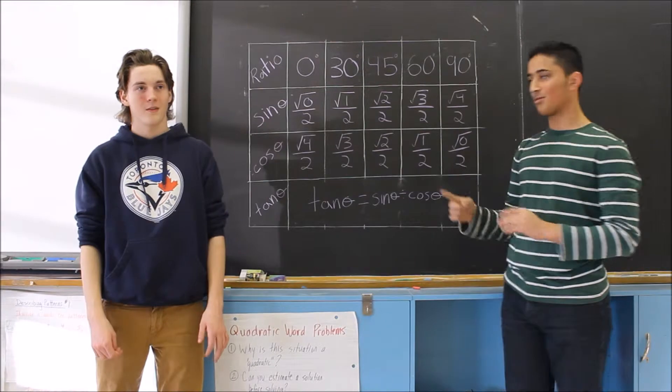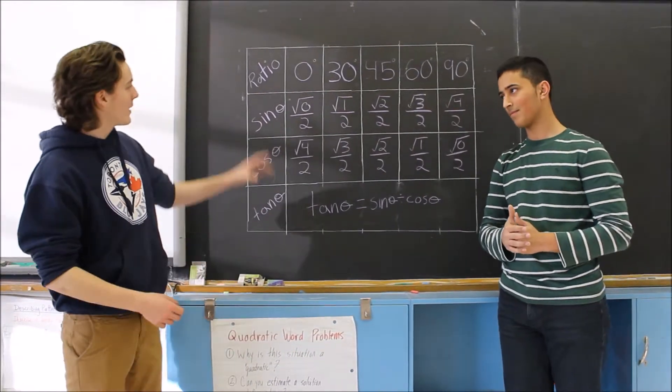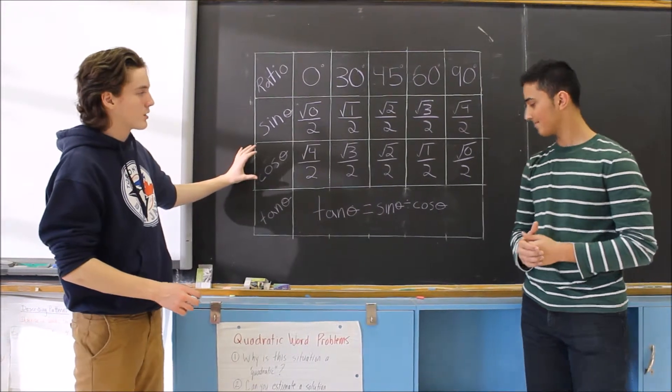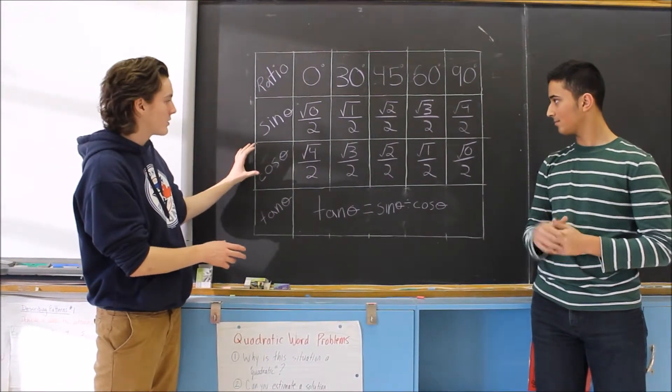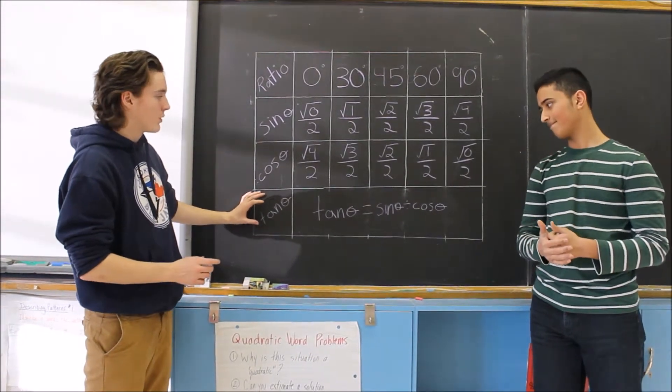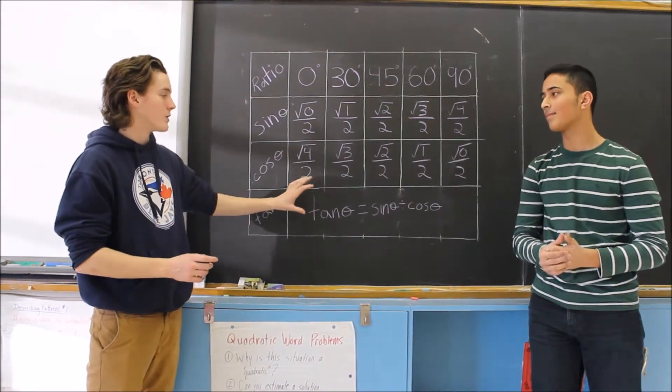To start off, let's take a look at the actual trig ratios. Here, we have the sine ratios, and then below that are the cos ratios, which are the same as the sine ratios, but they are flipped. And then finally, it's the tan ratio, which is just sine divided by cos.